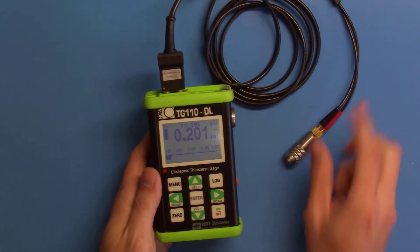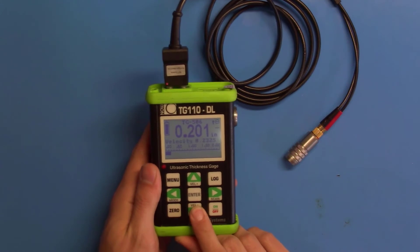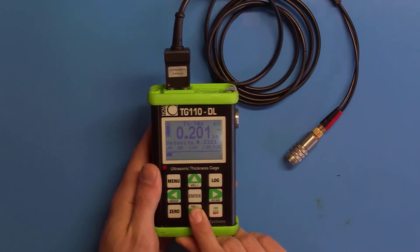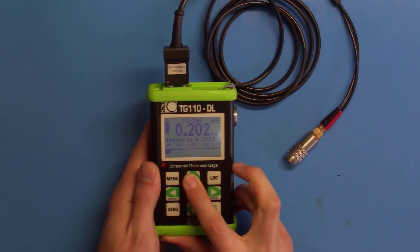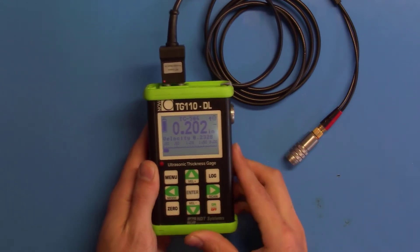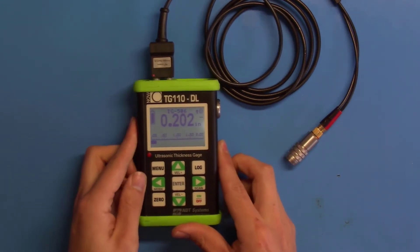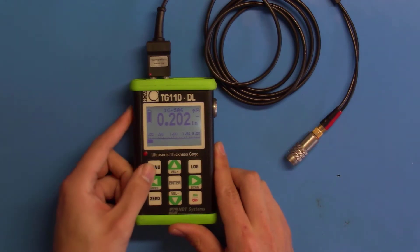To change your velocity, you can use the up and down arrow keys. And you would do this to calibrate your velocity to whatever material you're measuring. We can also calibrate the gauge using a two-point calibration. So let's go ahead and do that.